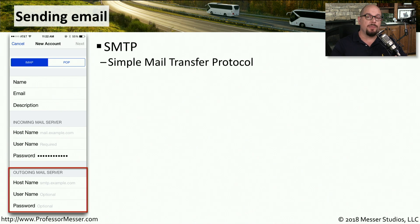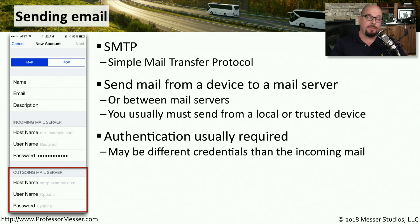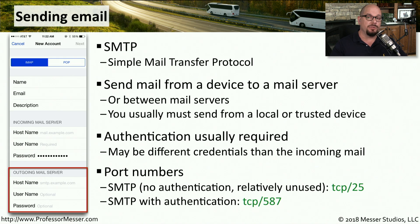Retrieving mail from your ISP uses POP3 or IMAP, but for sending email messages we use SMTP, the Simple Mail Transfer Protocol. This allows you to send email from your local device to your ISP's SMTP server. There's usually authentication involved, and you need to configure all of those settings on your mobile device. The username and password for SMTP may match what you use to retrieve email, but doesn't have to be. SMTP with no authentication typically uses TCP port 25, while authenticated SMTP runs over TCP port 587.